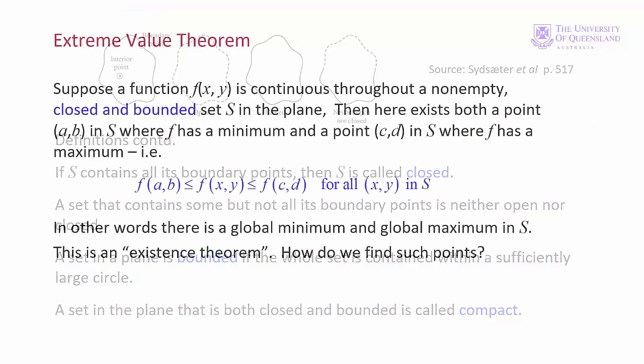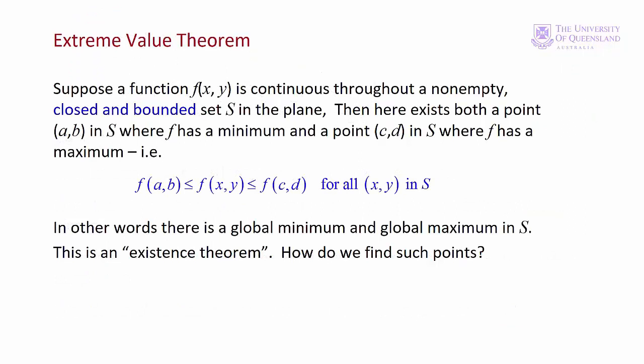Having stated those definitions, we can turn to the extreme value theorem. The extreme value theorem tells us that, given certain conditions, we can be certain a function will have a global maximum and a global minimum. What are these conditions? The domain of the function, set S, must be closed and bounded — and of course not empty — and the function must be continuous over the domain. If so, there is at least one point that is a global minimum and at least one point that is a global maximum. These conditions are sufficient but not necessary — it's possible that global extrema exist even if the domain is not closed and bounded or the function is discontinuous.